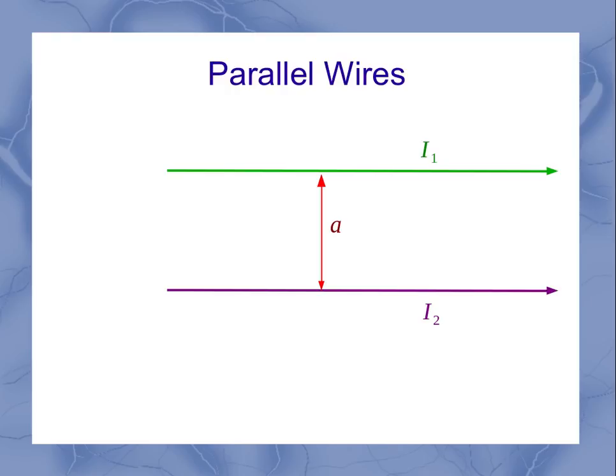Now if I wanted to find the force on wire 2, then I would need to know the current in wire 2, the length, and the magnetic field. But since it has to be an external magnetic field, this is actually the magnetic field created not by wire 2, but the magnetic field created by wire 1. So what is that equation?